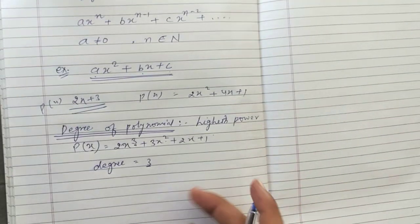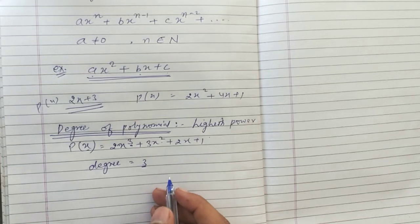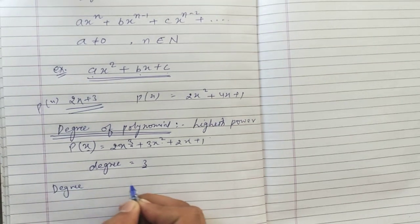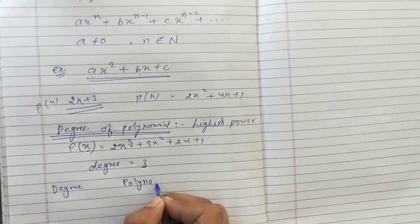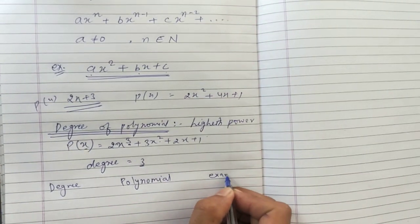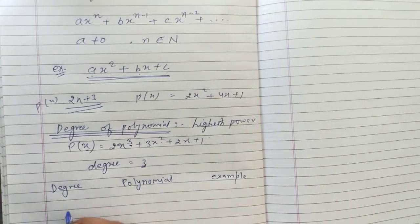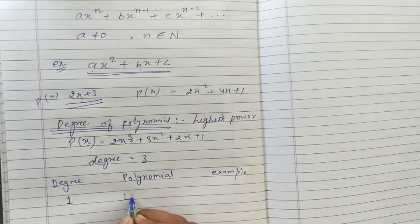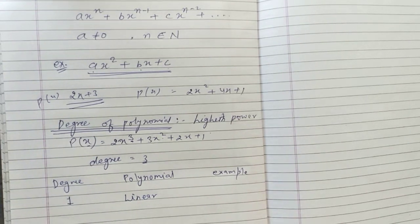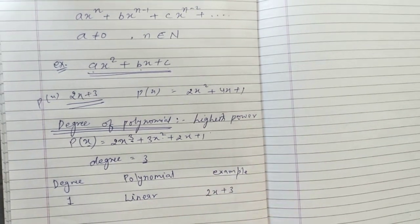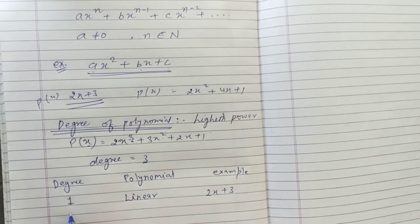We can identify the type of polynomial by its degree. If the degree is 1, the polynomial is known as a linear polynomial. For example, 2x + 3 is a linear polynomial. If the degree is 2, it is known as a quadratic polynomial.